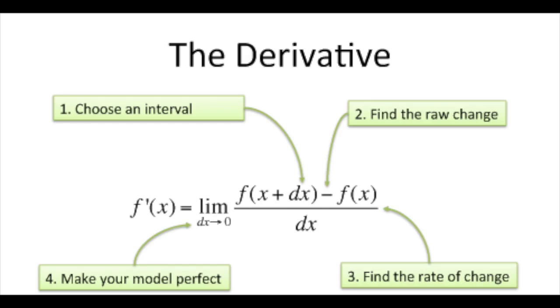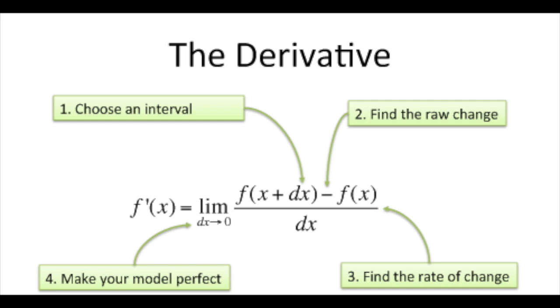The derivative is a way to represent rate of change, that is, the amount by which a function is changing at one given point. For functions of real numbers, it is the slope of a tangent line at a point on a graph.